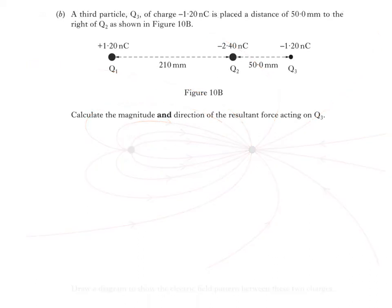Here it is. The question says, a third particle Q3 of charge negative 1.2 nanocoulombs is placed a distance of 50 millimeters to the right of Q2, as shown in figure 10B. We're then asked to calculate the magnitude and direction of the resultant force acting on Q3.